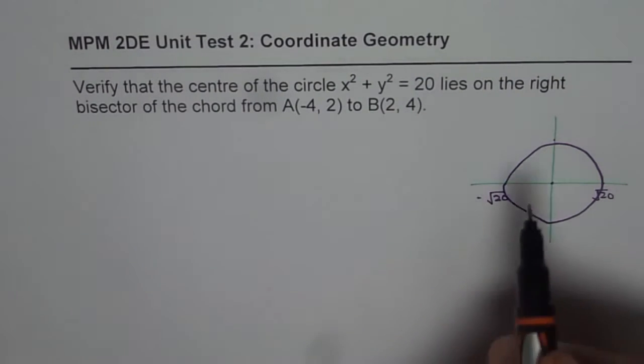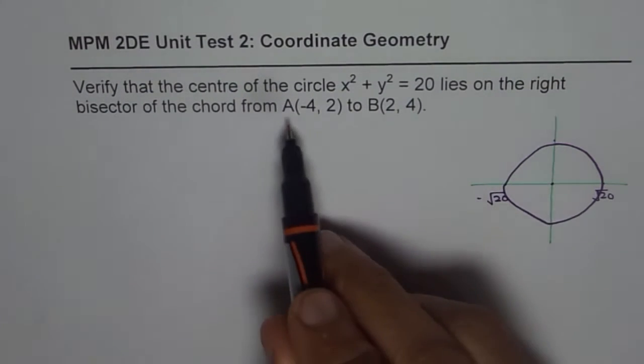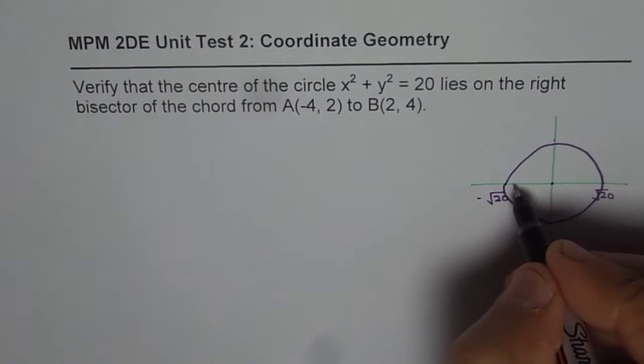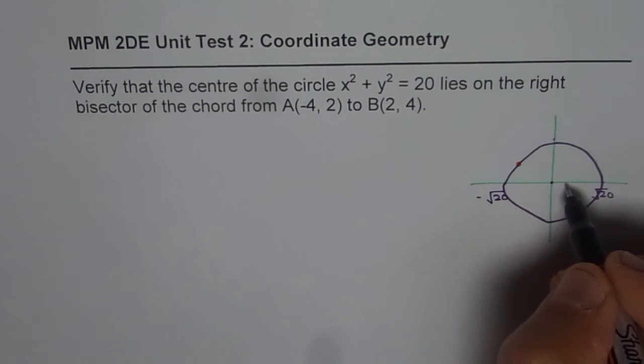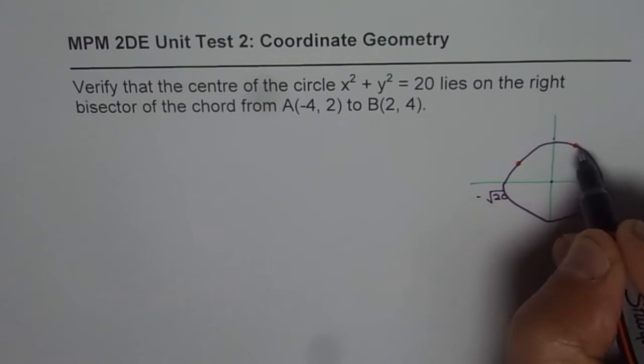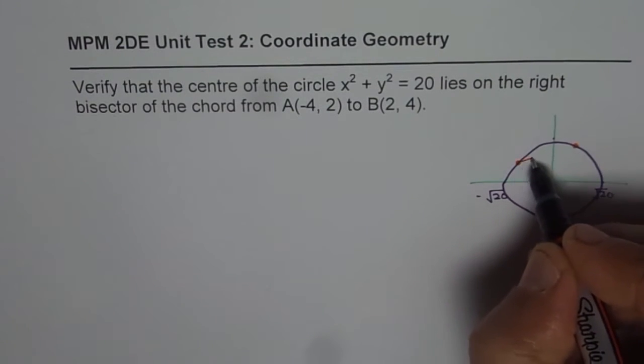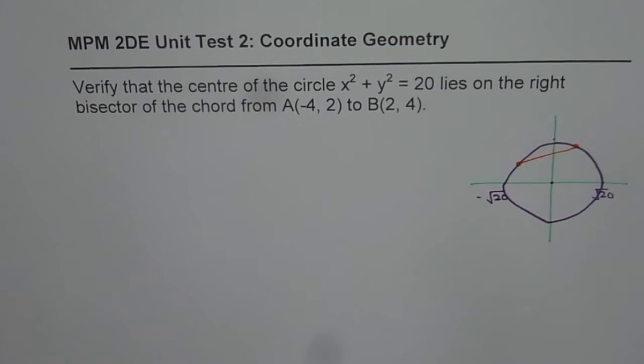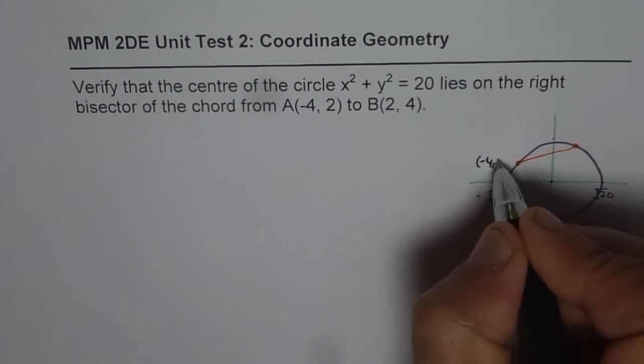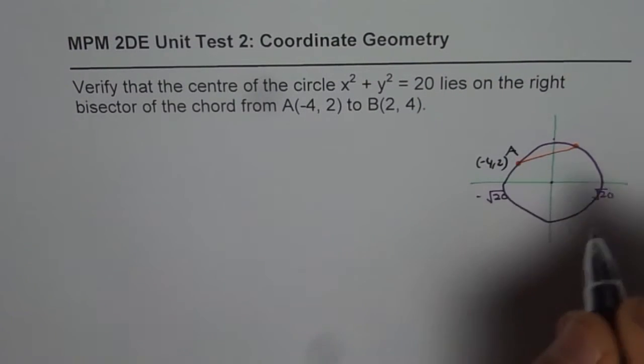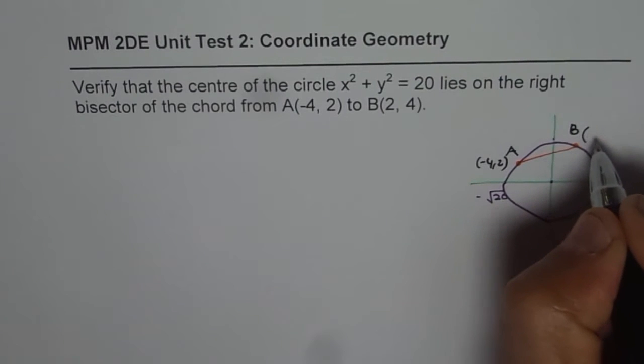And we are given a chord. Chord means connecting two points on the circle. A is (-4, 2), so let us say this is 4 and this is 2, and then we have 2 and 4, so 2 and then 4 may be this point. So let us connect them. So that's the chord AB. The chord A is (-4, 2) for A, and for B we have (2, 4). So these are the two points.